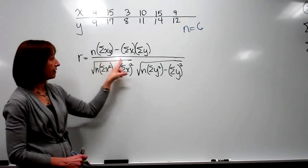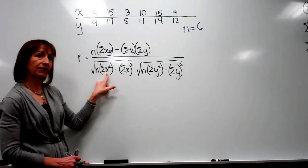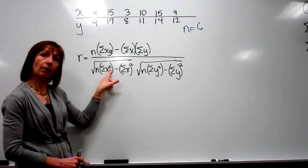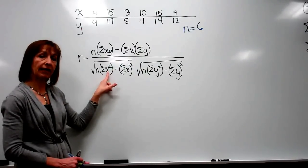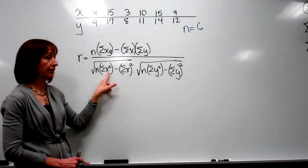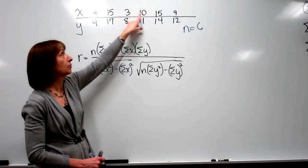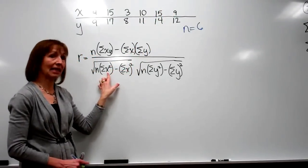In the denominator of the square root, our n again, and then inside this parentheses is the total of the x squared. So here I want to square each x value, and once I square each x value, add up all the squares of those x's. So we'll take like 4 squared plus 15 squared plus 3 squared plus 10 squared plus 15 squared plus 9 squared to get that value.